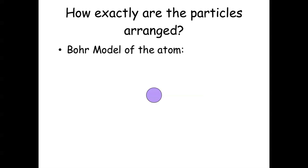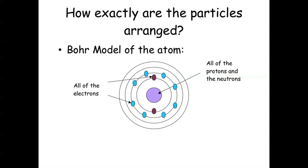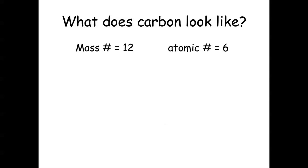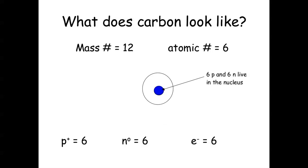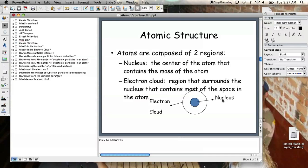How exactly are the particles arranged? We'll look at Bohr models. The Bohr model of the atom: all the protons and neutrons are in the center in the nucleus, and the electrons circulate in little orbitals around the nucleus. It's a simplified version of the cloud model, but it'll help you understand what makes compounds. Carbon has a mass number of 12 and an atomic number of 6, so it has 6 protons and 6 neutrons in the nucleus, and then 6 electrons. Notice that only 2 electrons fit on the innermost shell, and the remaining 4 go on the next shell. We'll talk more about how many can go on each shell when we look at the periodic table.